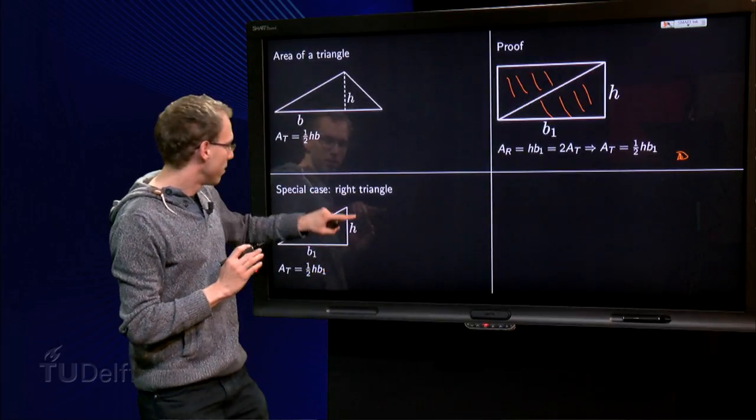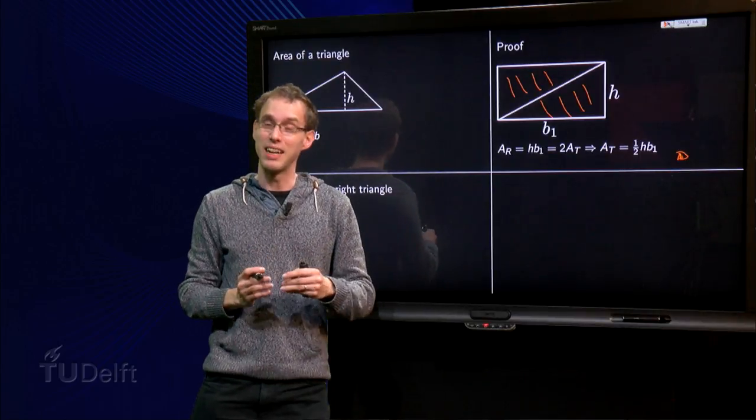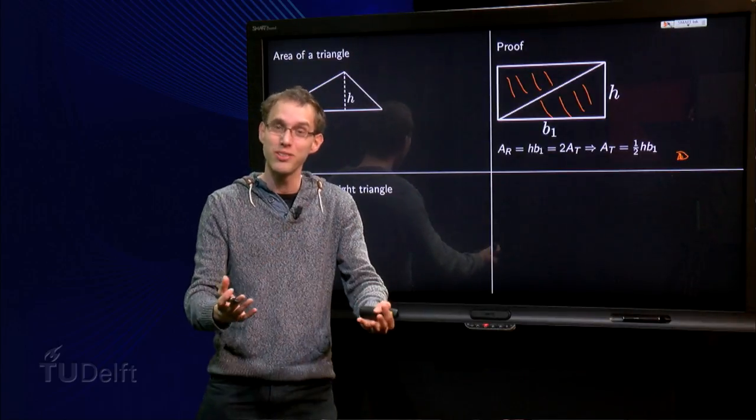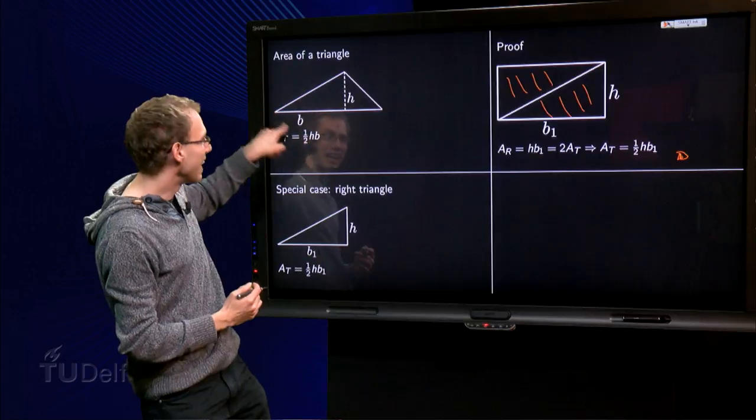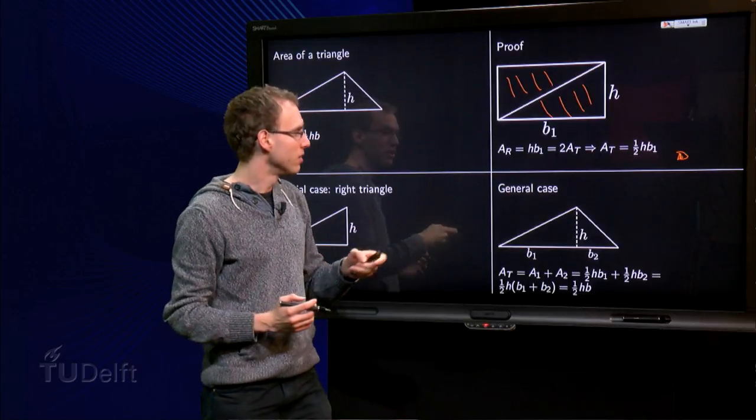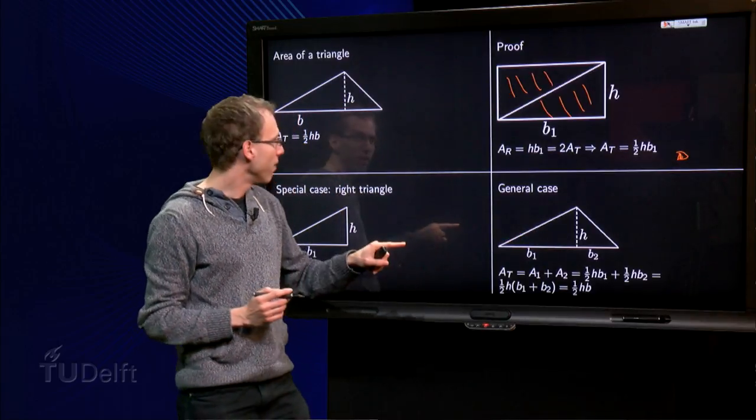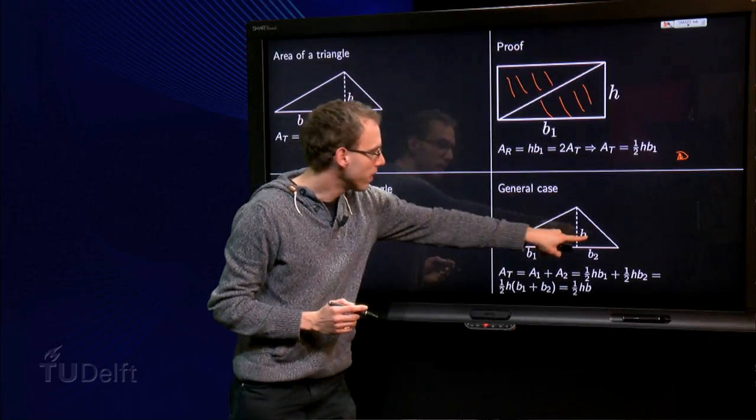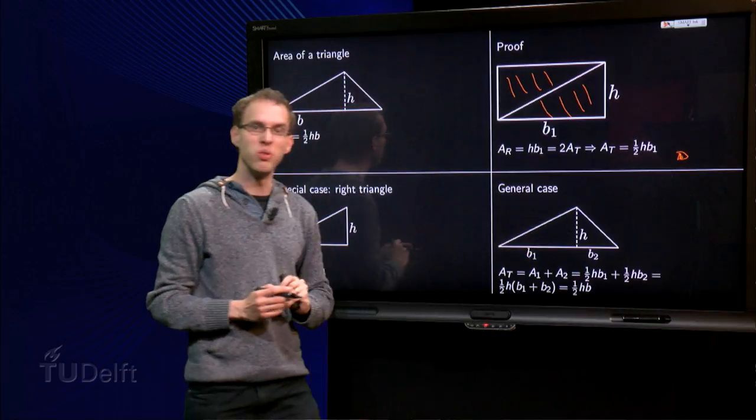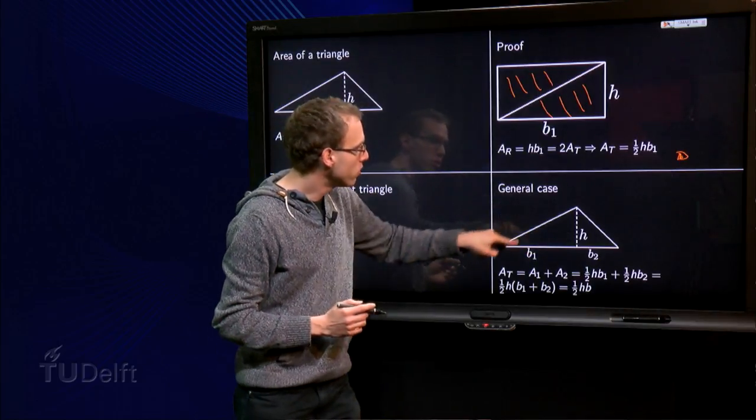Now we have proven this theorem about right triangles and we can use that result to prove our formula in the general case. So we go back to the general case. We have our h here and we divide the big B into a b1 and a b2. But now we have two right triangles.